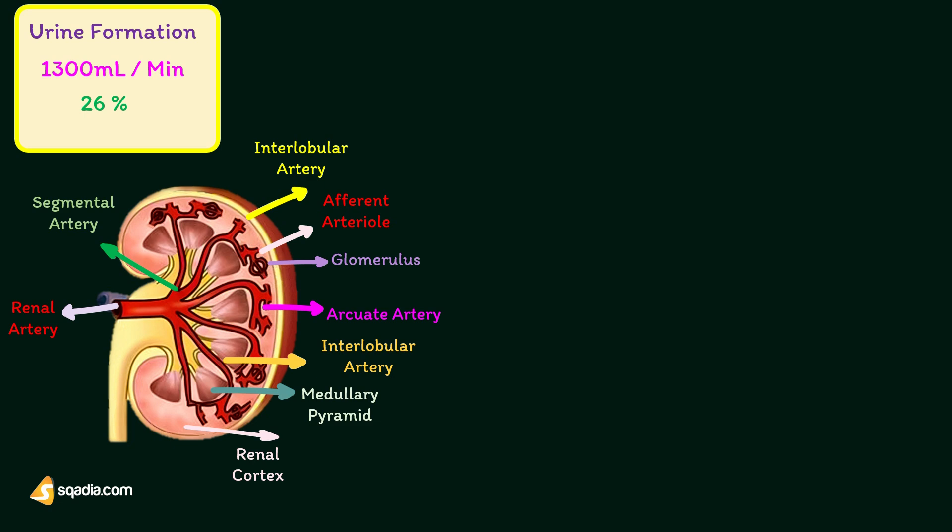The afferent arteriole enters the Bowman's capsule and forms a glomerular capillary tuft. After entering the Bowman's capsule, the afferent arteriole divides into four or five large capillaries. Each large capillary divides into small glomerular capillaries which form loops, and the capillary loops unite to form the efferent arteriole, which leaves the Bowman's capsule.